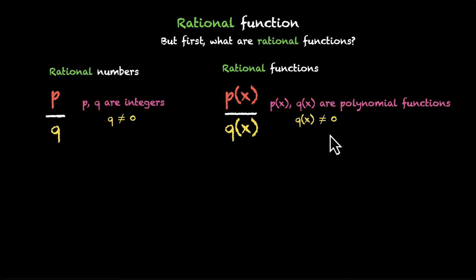we also have a constraint here. We don't want the q(x) to be 0, because when that happens, the denominator is 0 and math breaks. So very similar definitions. Here we have integers. Here we have polynomial functions.